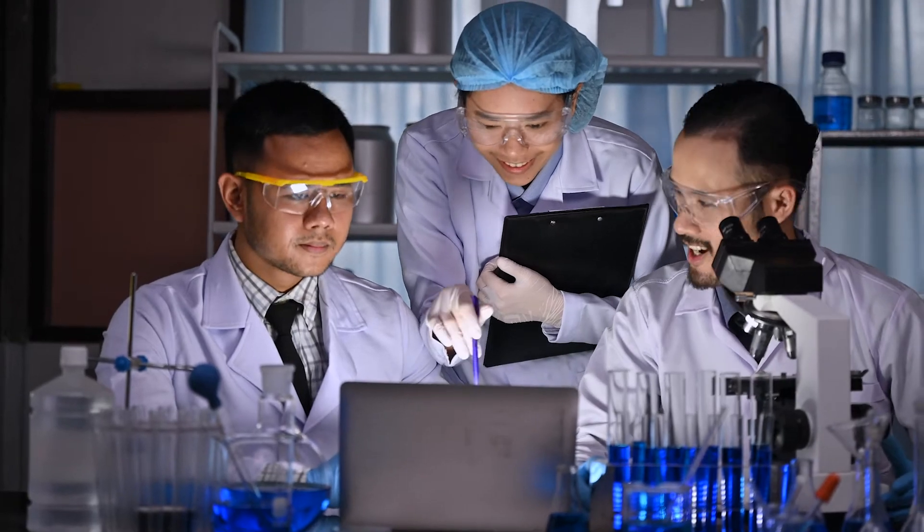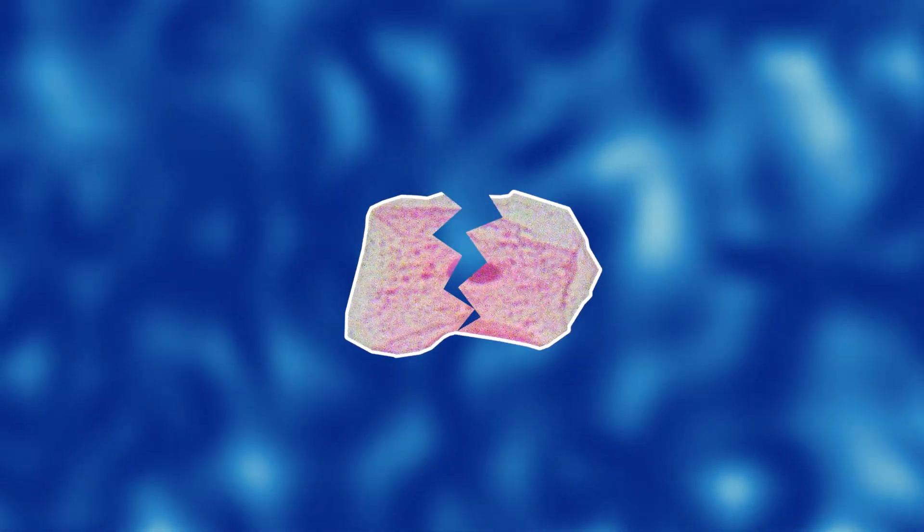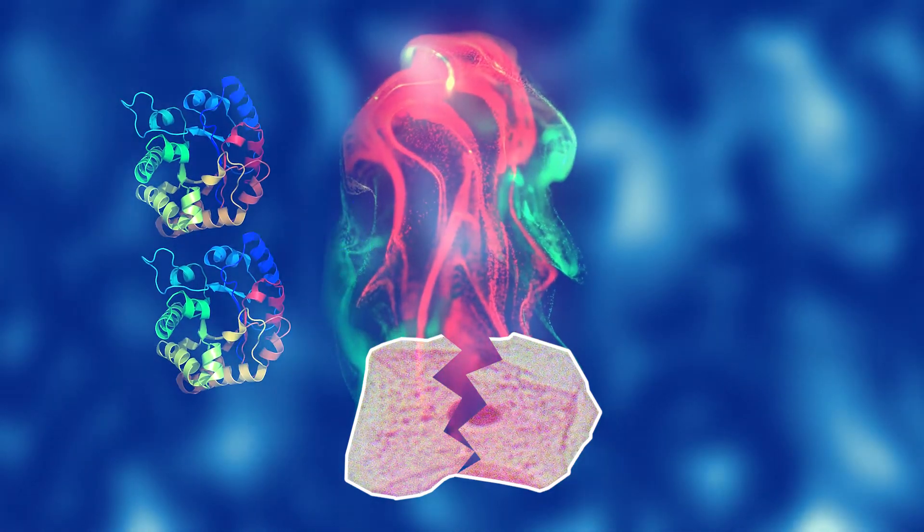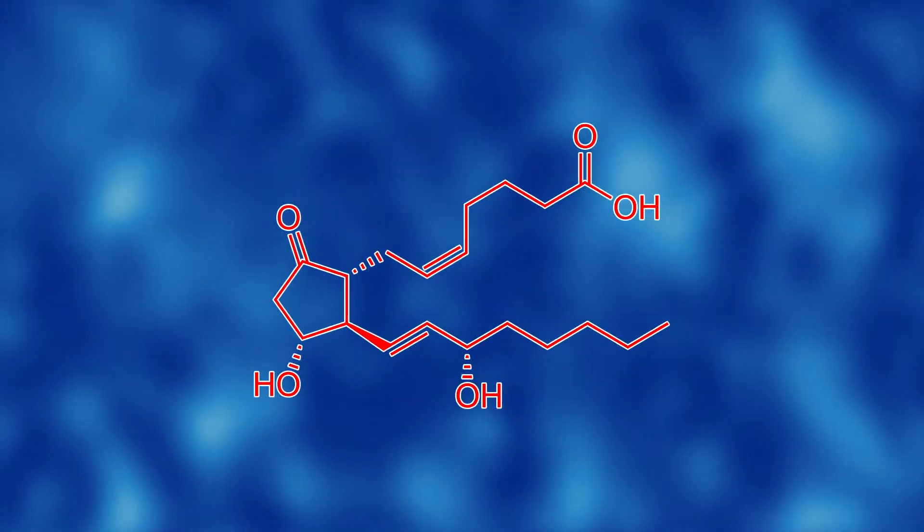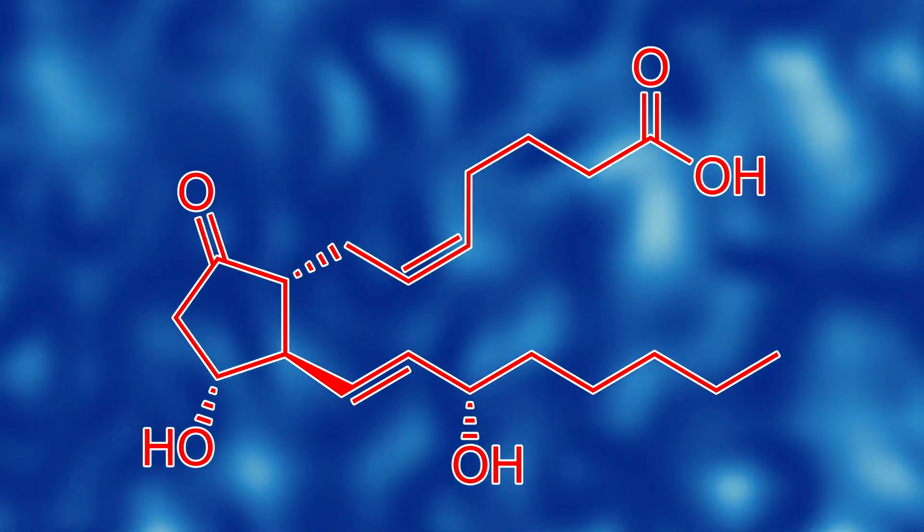But this is how scientists think it might work. When a cell is damaged, it releases arachidonic acid which is broken down by an enzyme called cyclooxygenase, or COX, into prostaglandins. And it's these prostaglandins that cause pain.